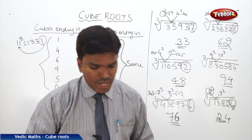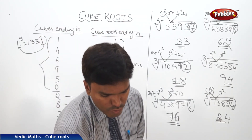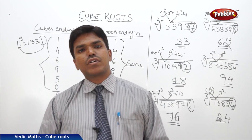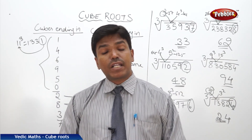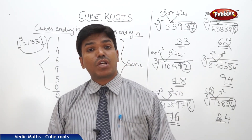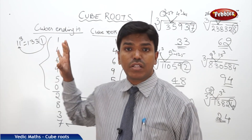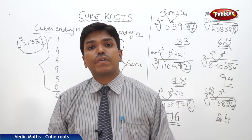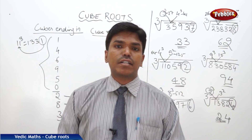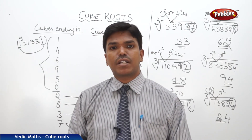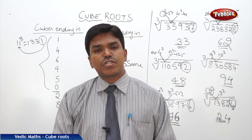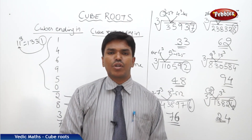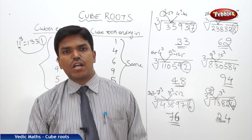So like this, we can easily solve cube roots. The condition is that we should be thorough with the digit-ending table, thorough with the squares until 30, and thorough with the cubes until 10. This way we can easily calculate squares and cube roots.